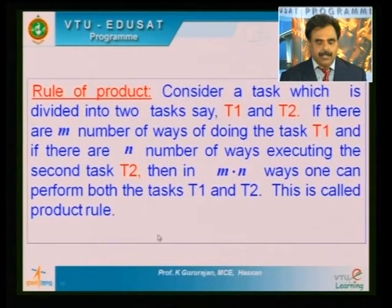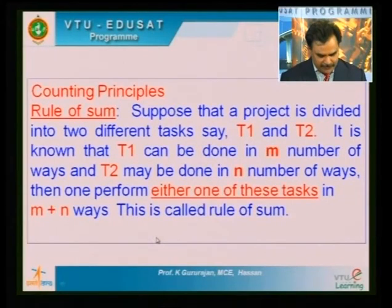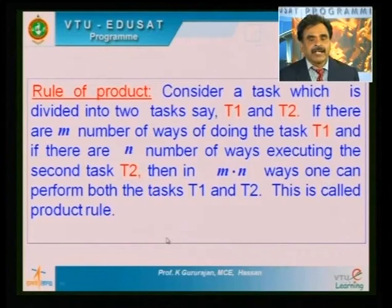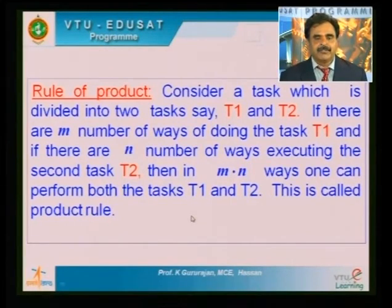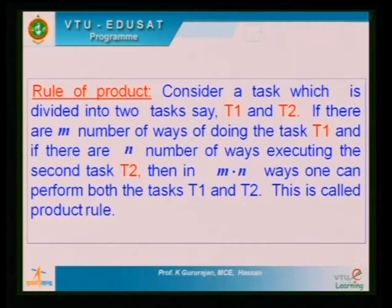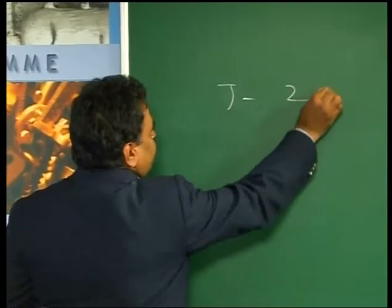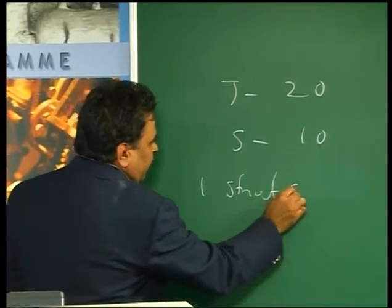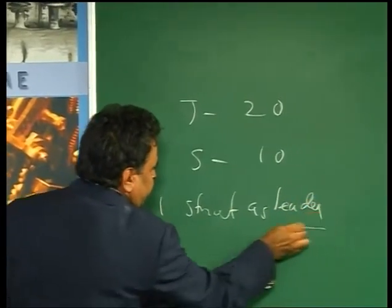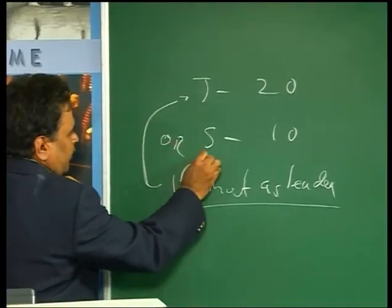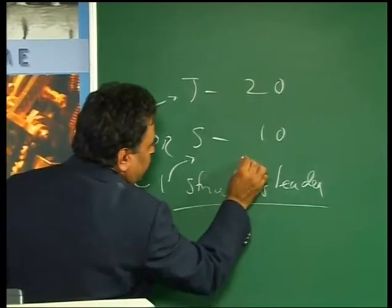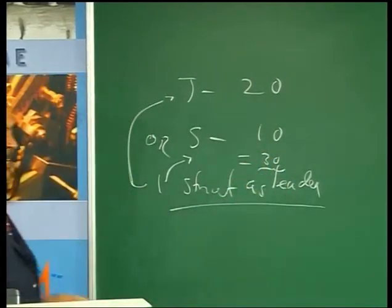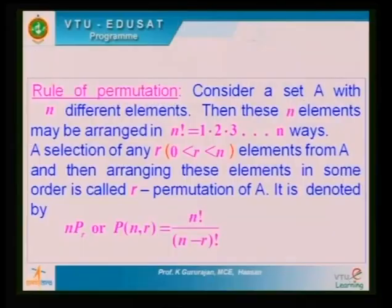Example for the rule of sum: suppose a class has junior students (20) and senior students (10). I want to select one student as leader — the leader can belong to either the junior or senior class. Then the number of choices is 20 plus 10 equals 30, because I use the logical OR here.